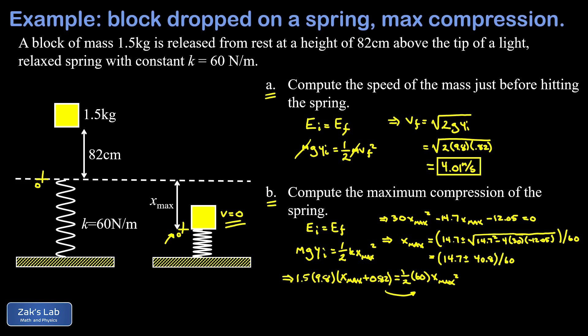So I can see if I keep the plus sign term here it's going to give me a positive result for x max. If I use the minus sign, it gives me a negative result. So we have to go back and think, which one of these is the physical result that we want to keep?